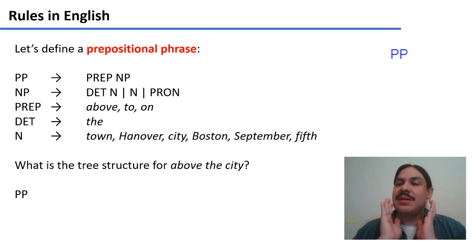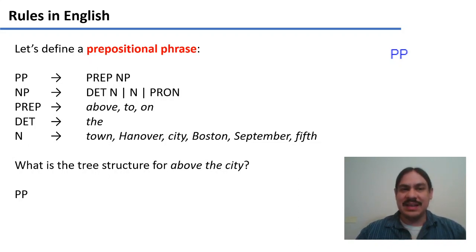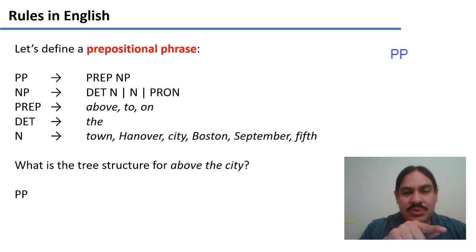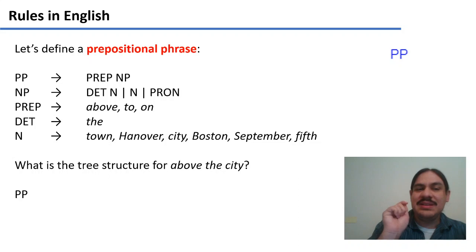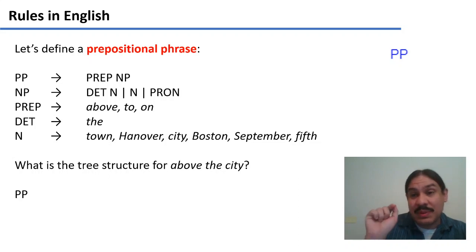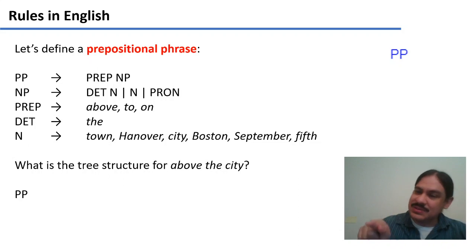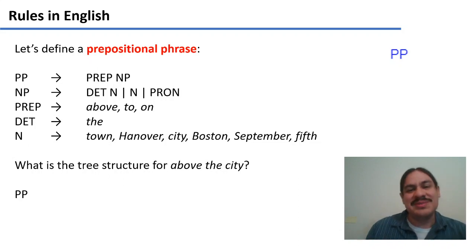So what would you do if you wanted to draw the structure for 'above the city'? Pause the video and try to use these rules to draw the tree diagram for the prepositional phrase 'above the city.' It means that the PP rule would lead to some other nodes, and those would lead to some other nodes, and then a terminal. Give it a try.